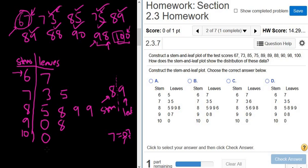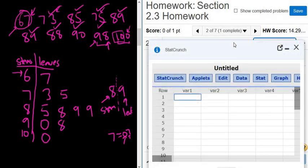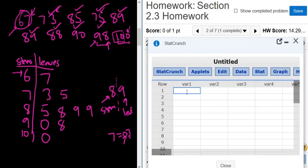You can do it with StatCrunch. So watch this. I'm going to go ahead and click question help and StatCrunch. And then just type the numbers in. So it was 67, 73, 85, 75, 89, 89, 88, 90, 98, 100.